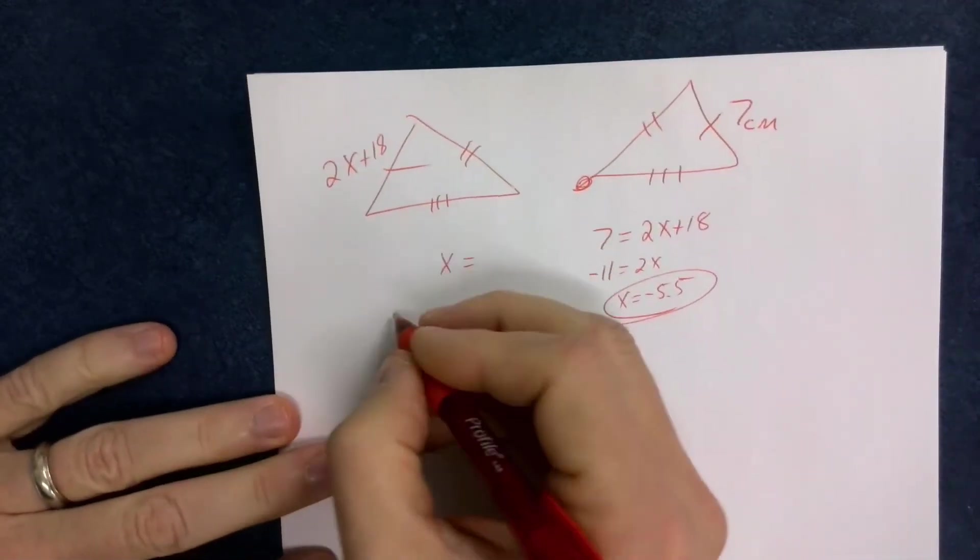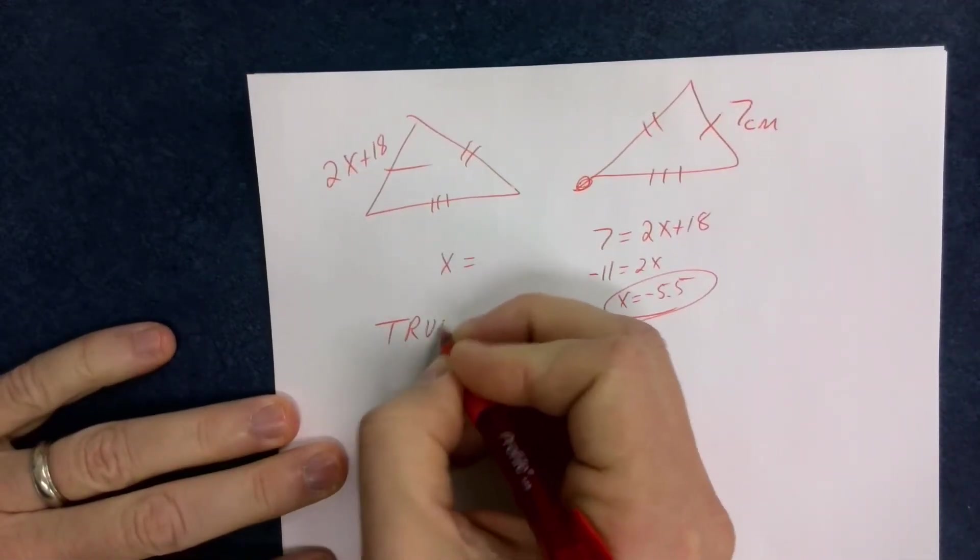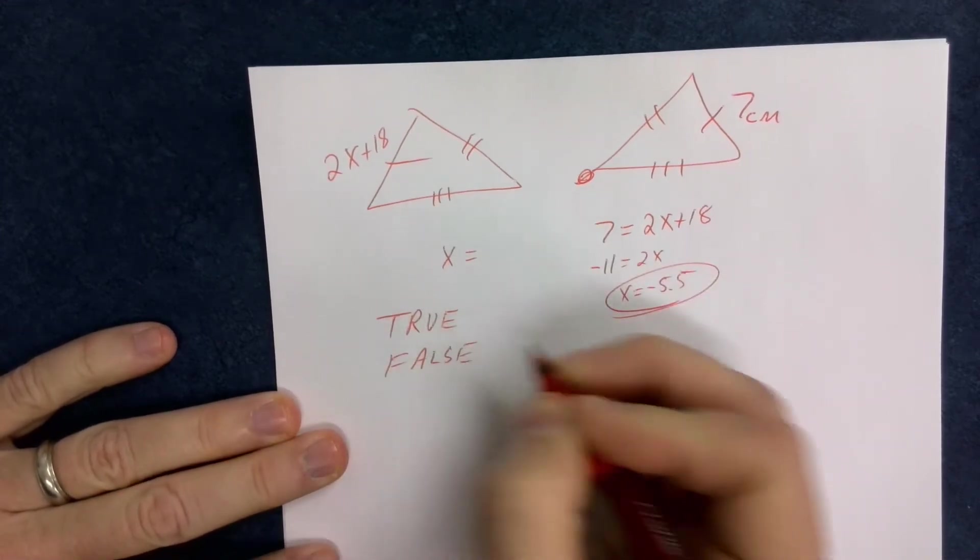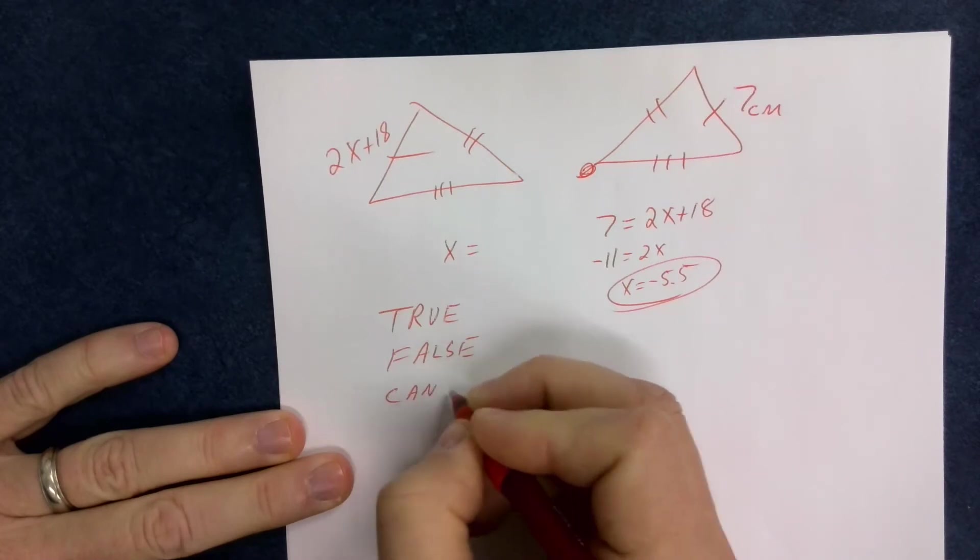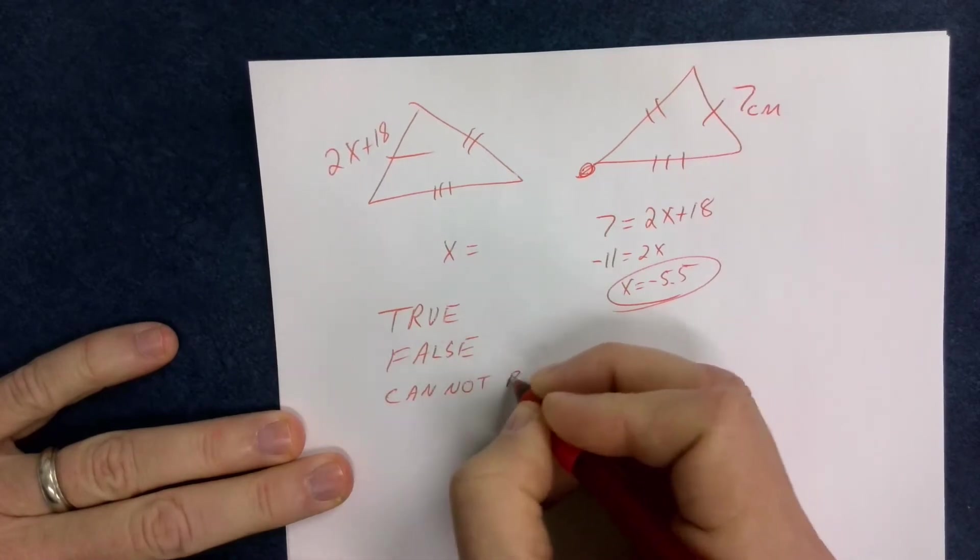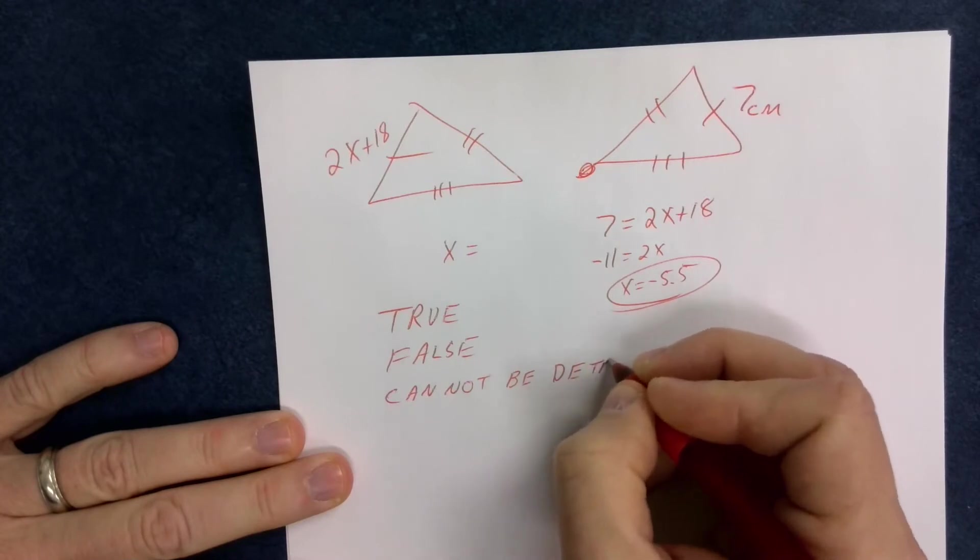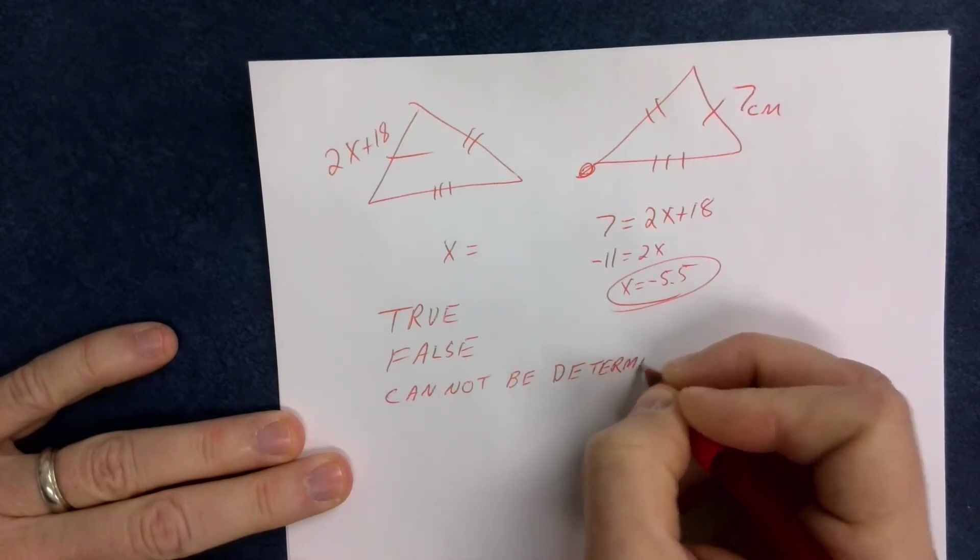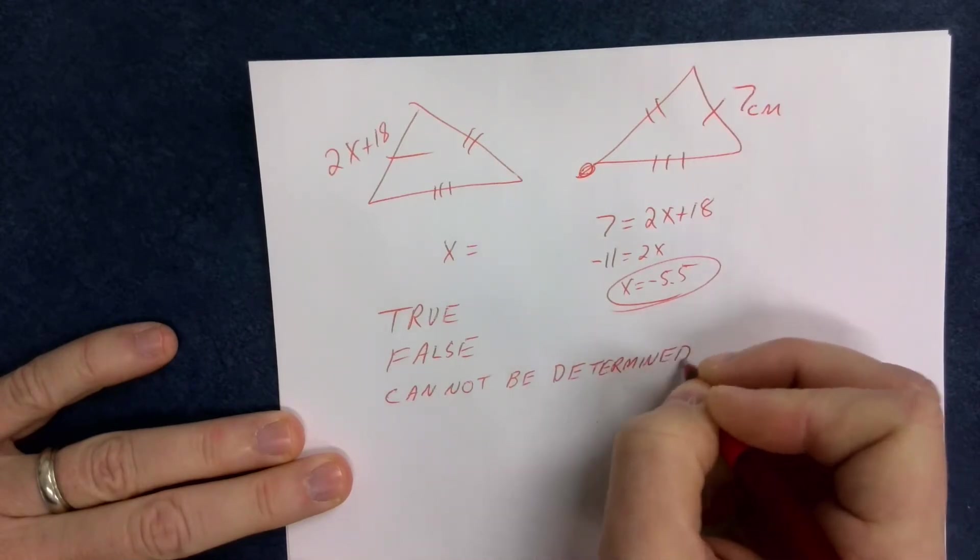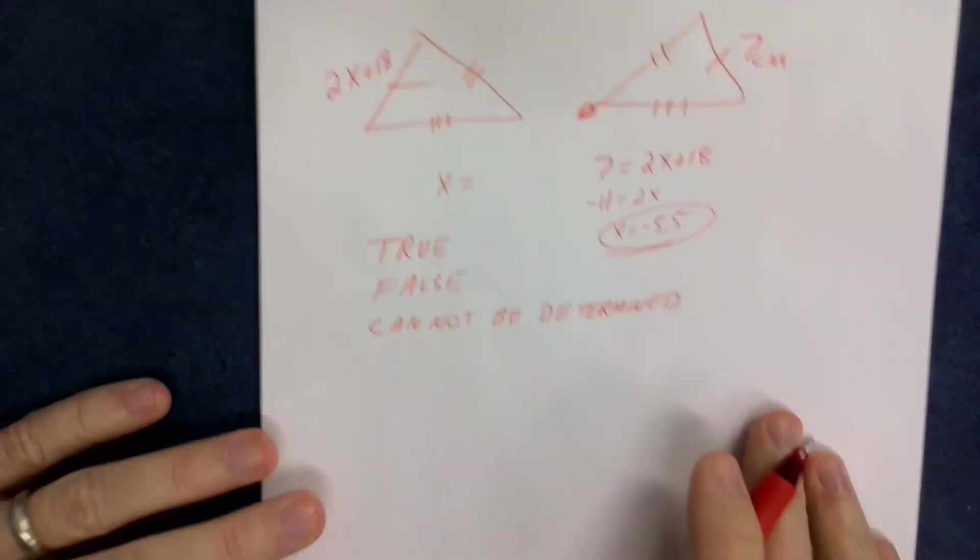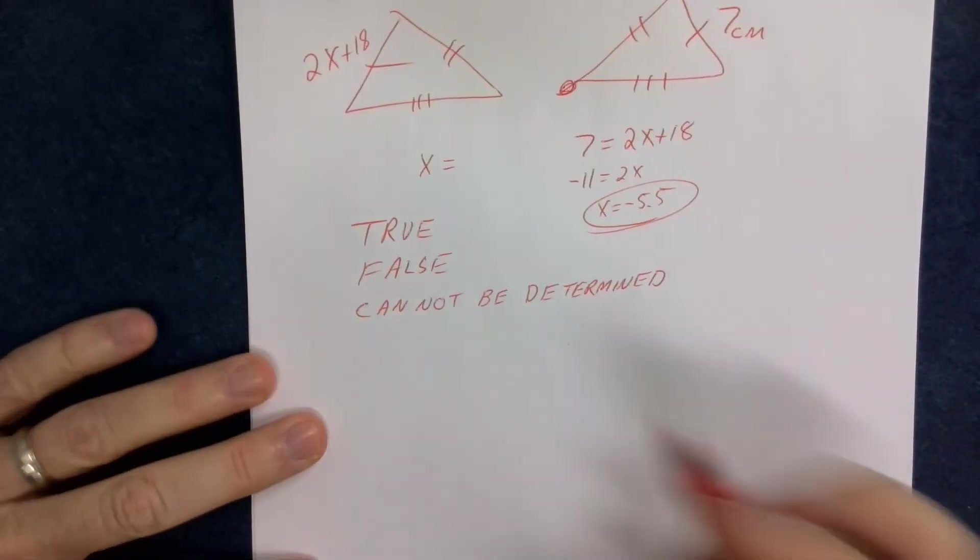I do have a whole lot of problems that ask this true or false or cannot be determined, and there's probably like 20 or 30 of those ones throughout the whole thing, but if you understand how the relationships go between the triangles, then you'd be all set.